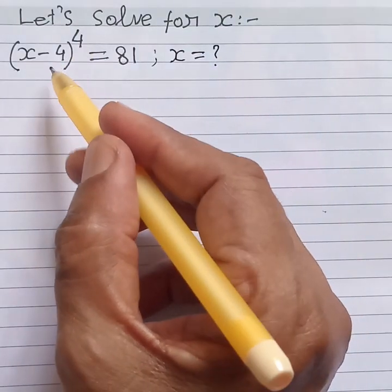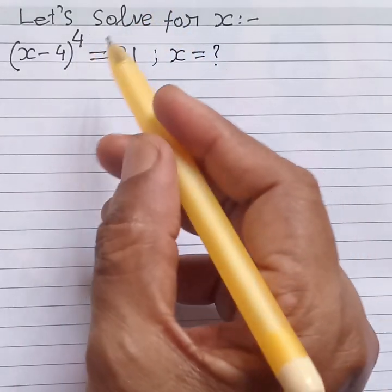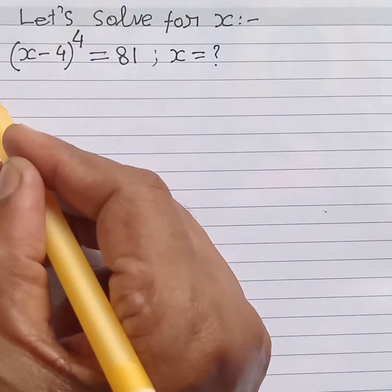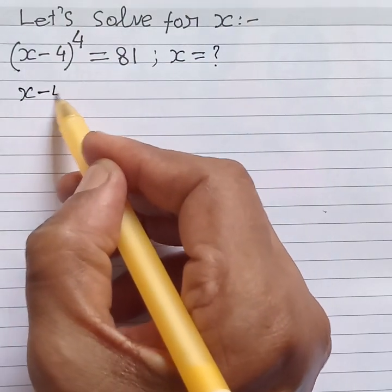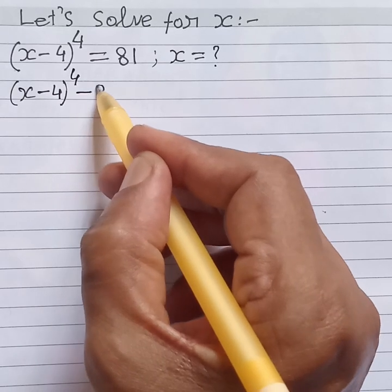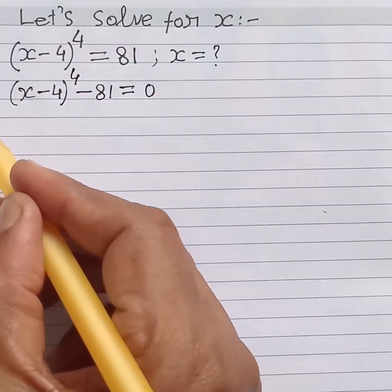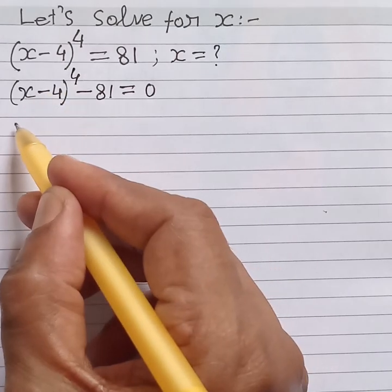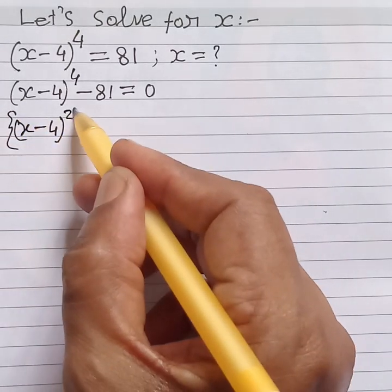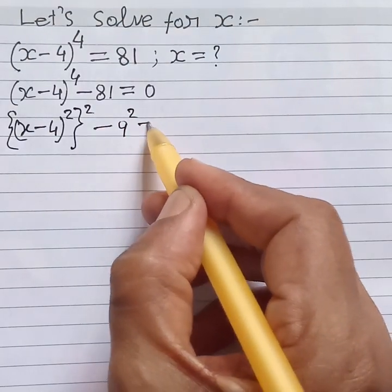Now for the solution. We see here the power of this equation is 4, so we get 4 roots from this equation. This implies (x minus 4) to the power 4 minus 81 is equal to 0.